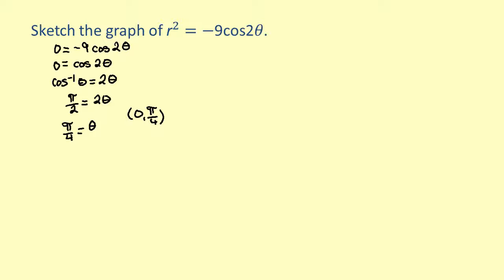We know that the cosine function has a maximum at 1. So we set negative cosine of 2 theta equal to 1. Solving for 2 theta, we get the inverse cosine of negative 1 is equal to 2 theta. The inverse cosine of negative 1 is pi.